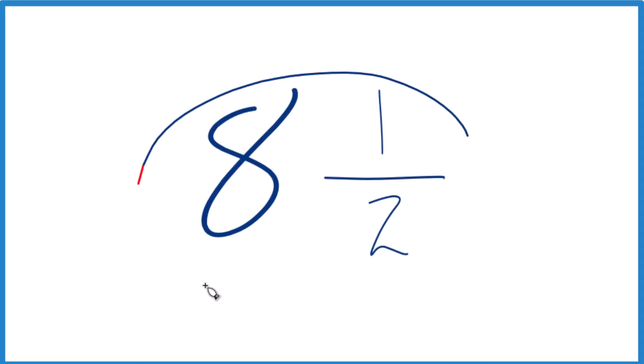Let's convert the fraction 8 and 1 half to a decimal. So here's how we do it. Probably the easiest way is you have 8, that's a whole number.